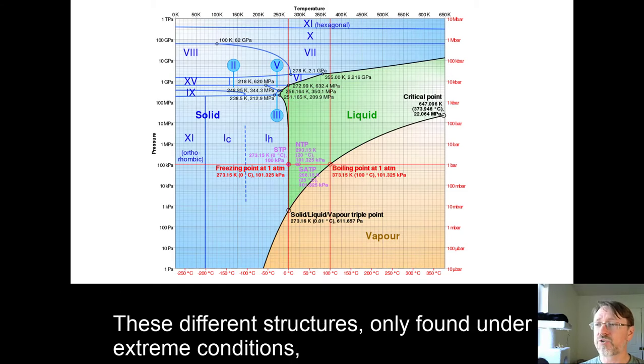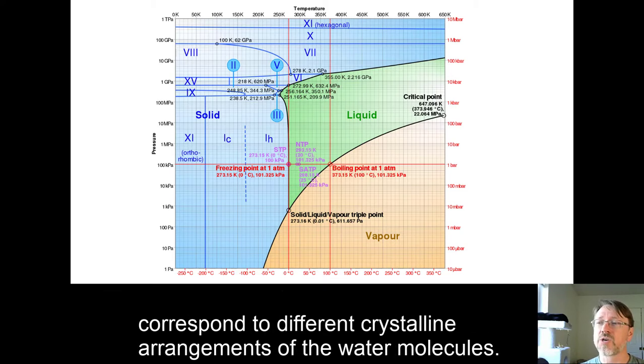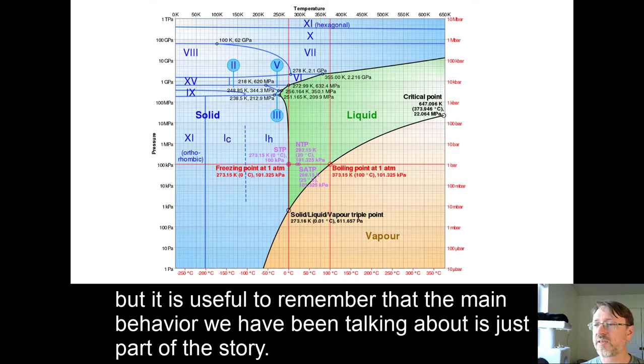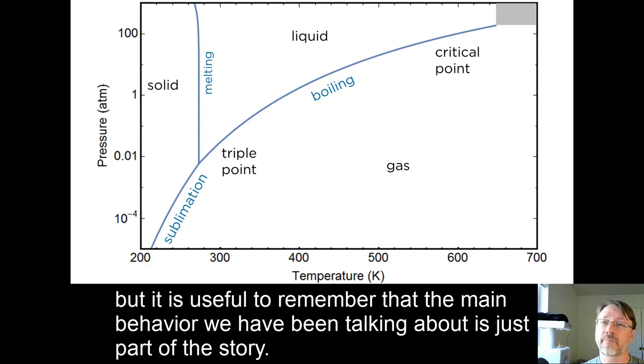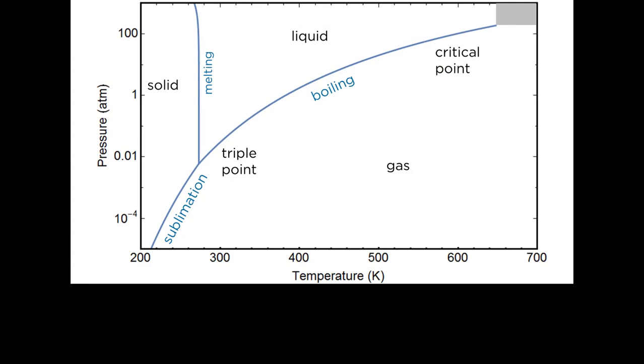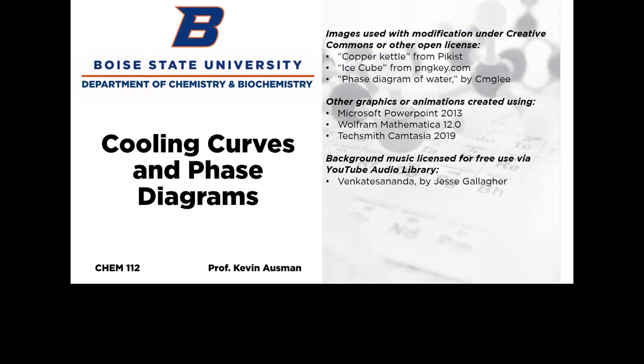If we zoom out further, we find that there are actually multiple different solid forms of ice, as is true of many substances. These different structures, only found under extreme conditions, correspond to different crystalline arrangements of the water molecules. We're not going to go into those other structures in detail for this class, but it's useful to remember that the main behavior we've been talking about is just part of the story.